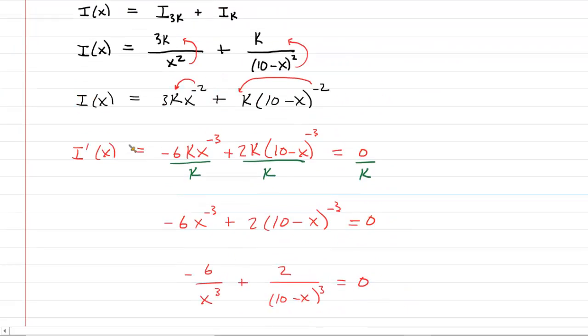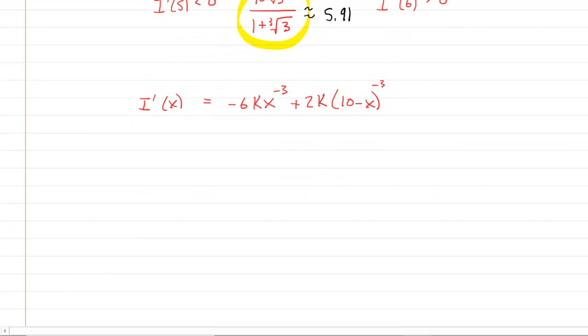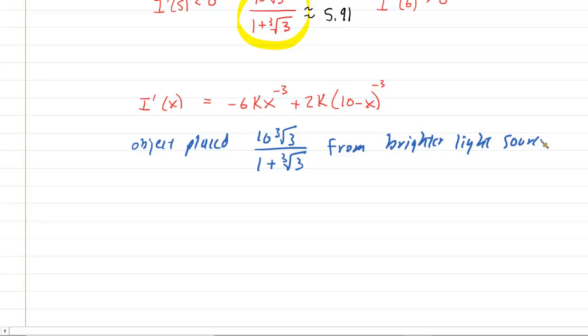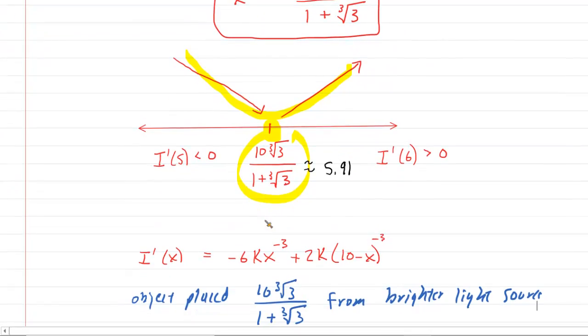Now we just make sure we've answered the question in full. It says, where should the object be placed? Well, we discovered x. So it should be placed that crazy number away from the more illuminated light source. So we can say that the object should be placed 10 cube root of 3 over 1 plus cube root of 3 from the brighter light source. That would be the correct answer to the question. I suppose we should put the unit in here as well. The distances were measured in, it looks like feet. So just don't forget to put feet right there.